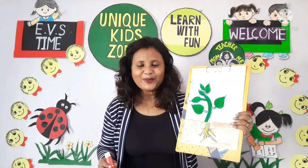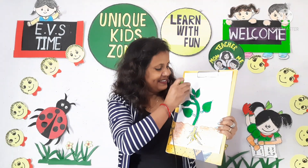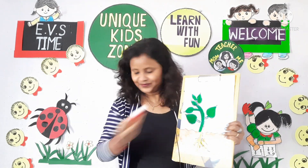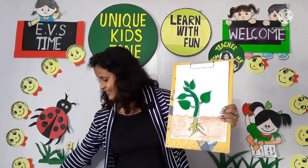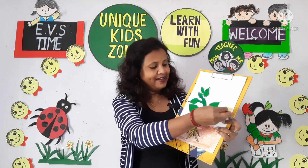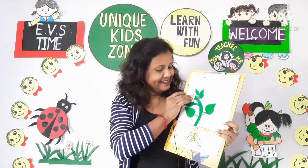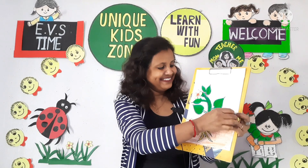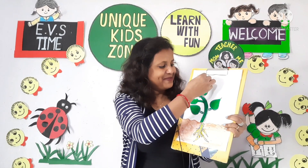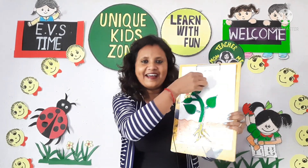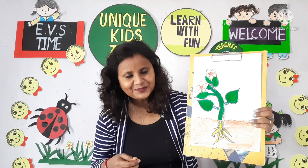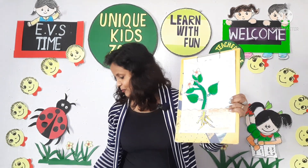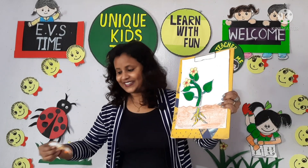Then another most important part of a plant — the pretty, pretty flower. Now the plant is looking beautiful with its flower.